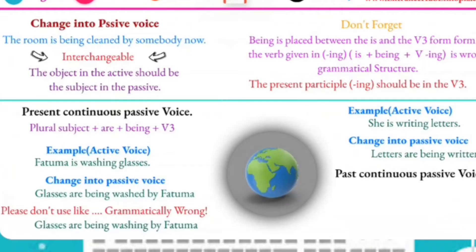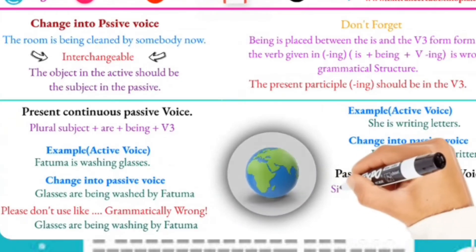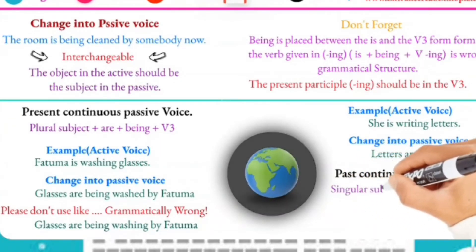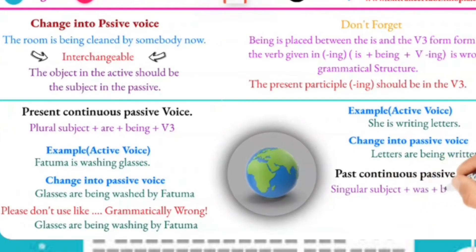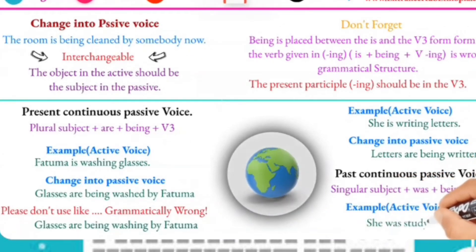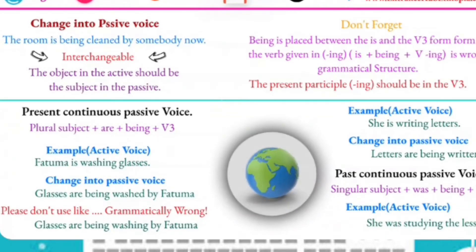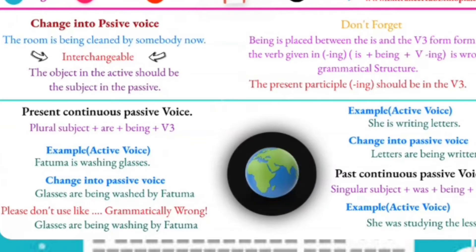Now for the past continuous passive. The formula for the singular subject is: singular subject plus was plus being plus verb three. For example: 'She was studying the lesson' — this is the active form. To convert it to passive, we use: singular subject plus was plus being plus past participle verb.